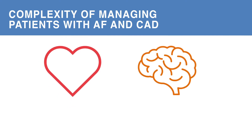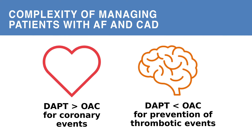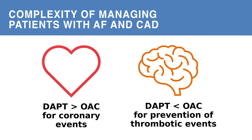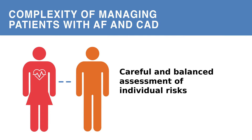Each type of therapy offers a relative efficacy benefit. Dual antiplatelet therapy is more effective than OAC alone for prevention of coronary events post-PCI or after an acute coronary syndrome, but it is inferior to OAC for the prevention of thrombotic events in patients with AF or atrial flutter. As such, management of these patients requires a careful and balanced assessment of the individual risks of bleeding against the anticipated effects on thrombotic outcomes.